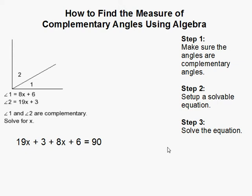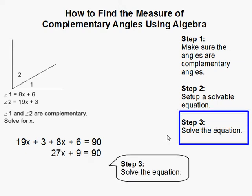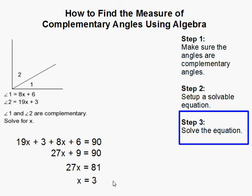Once I have the equation, we just have to solve using basic algebra. The first thing you do is combine like terms. So 19x plus 8x gives me 27x, and 3 plus 6 gives me 9. Then we subtract 9 from both sides. That gives me 27x equals 81. And then divide both sides by 27 and I get 3.